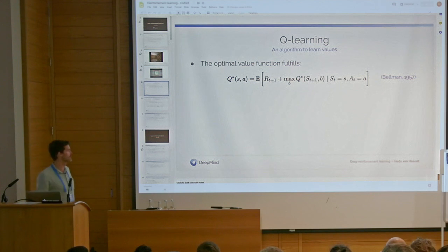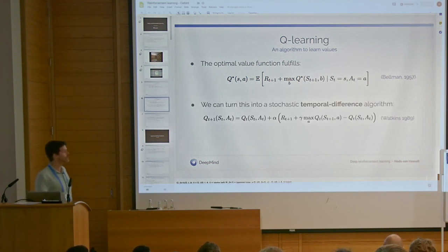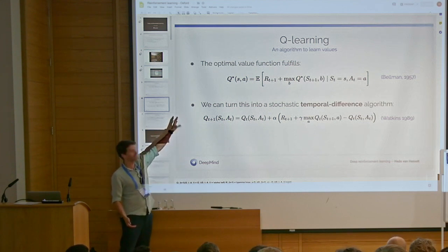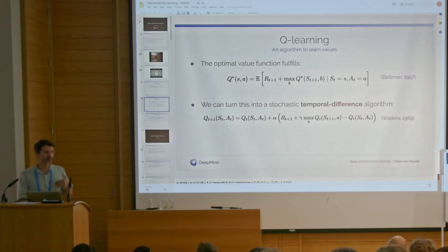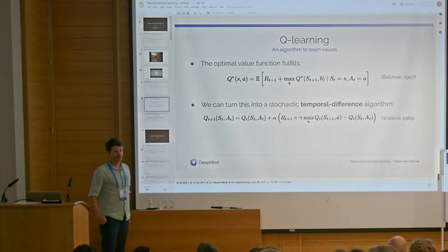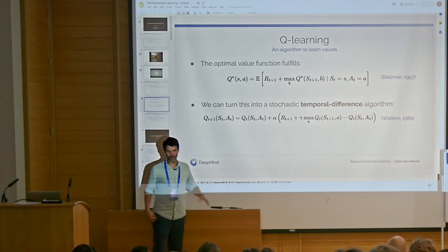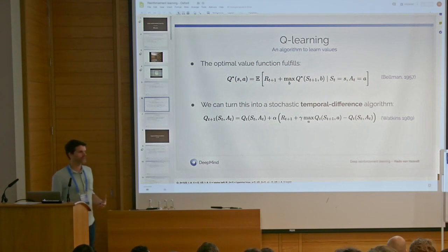Here's an example of such an algorithm. This is again the Bellman optimality equation, this time for action values. We can turn this into a stochastic update — a sampled update. This is a temporal difference algorithm, a term coined by Rich Sutton to describe the whole family of these algorithms. Temporal difference learning works by looking at the temporal difference between the reward and the value at the next state versus the value at your current state — that whole term between the brackets. You can think of this as an error: the value at your current state-action pair should be equal to the actual reward and value of the next state, and we try to make that equal by incrementally updating towards it.